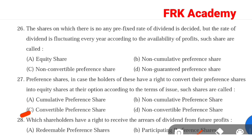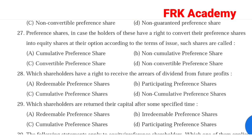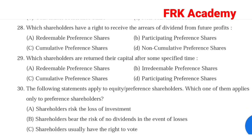Question 28: Which shareholders have the right to receive arrears of dividend from future profits? Answer: Option C, cumulative preference shares. Question 29: Which shareholders are returned their capital after some specified time? Answer: Option A, redeemable preference shares.